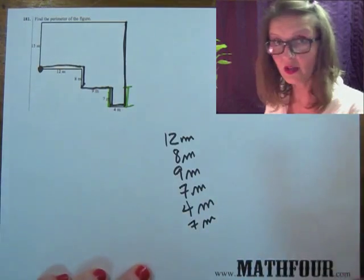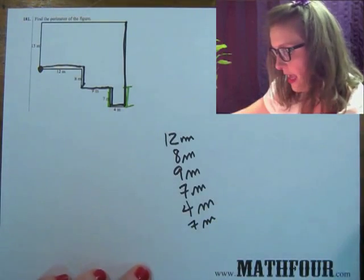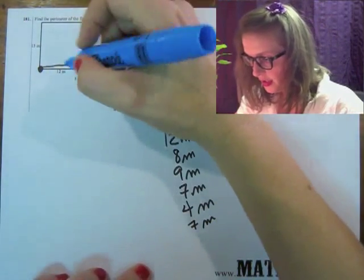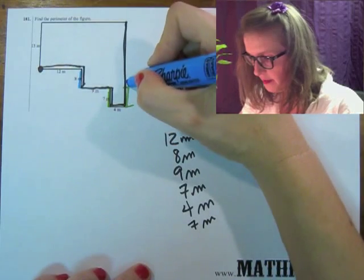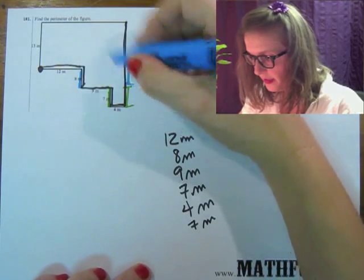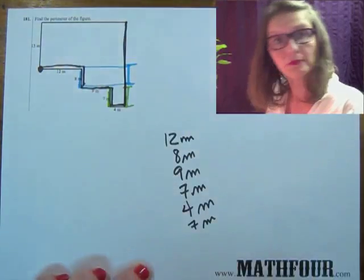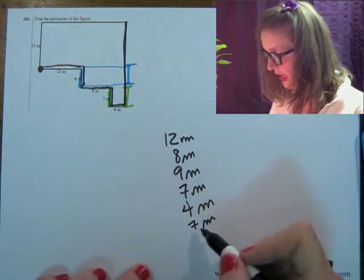I'm going to run out of space, aren't I? And then how about this distance, 8 meters, is right up here. See how that goes across? So then I have 8 meters there.